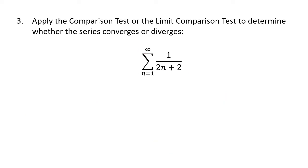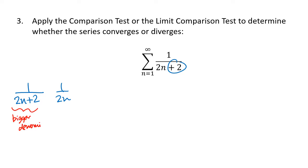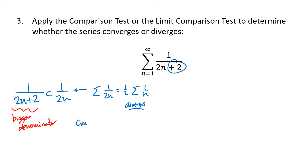Now for a more complicated example: we have 1/(2n+2). The plus 2 isn't going to matter much, so we think about comparing to 1/(2n). The fraction 1/(2n+2) has a bigger denominator, so it's a smaller fraction. But 1/(2n) = (1/2)·(1/n), which is half the harmonic series, and that diverges. Our series is less than something that diverges, which doesn't help — so the comparison test doesn't apply here.